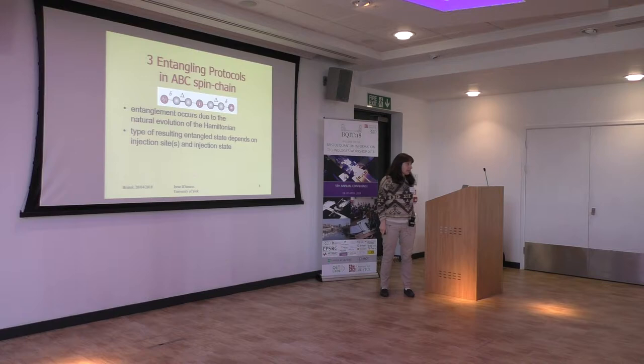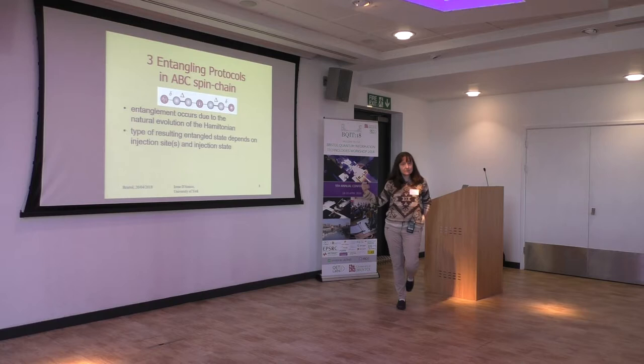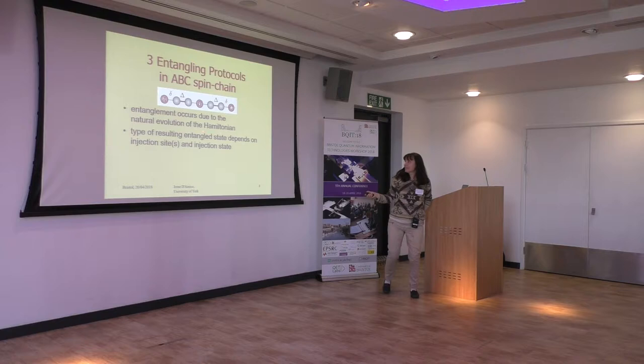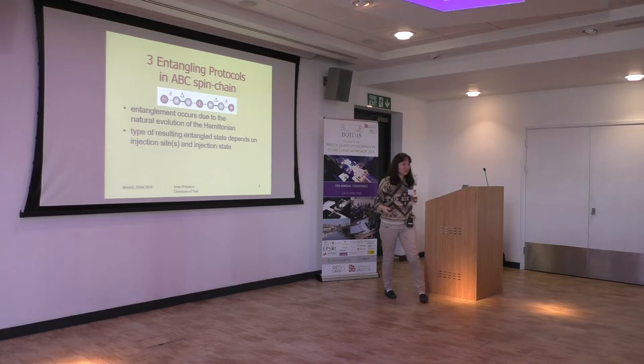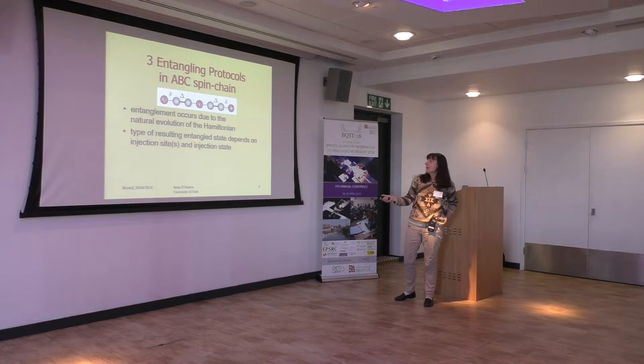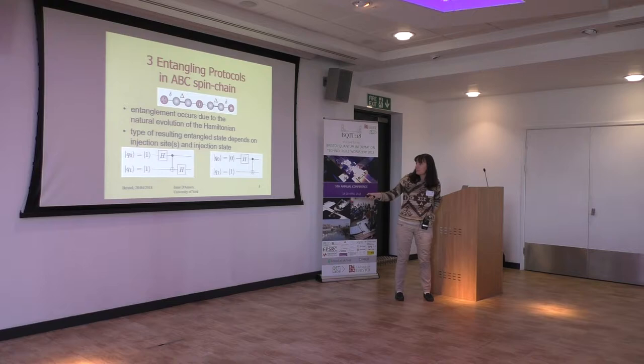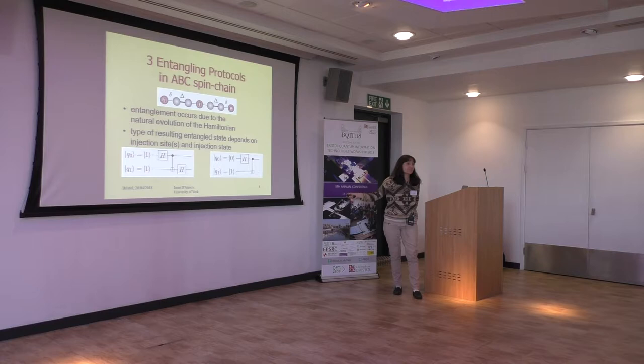We have uncovered three different types of entangling protocols in this type of chain, which is why we find it so interesting. Importantly, entanglement occurs through the natural evolution of the Hamiltonian I just showed. The type of resulting entanglement depends on the initial state — specifically what is injected and into how many sites. The types of entanglement that can be produced are cluster states or Bell states.